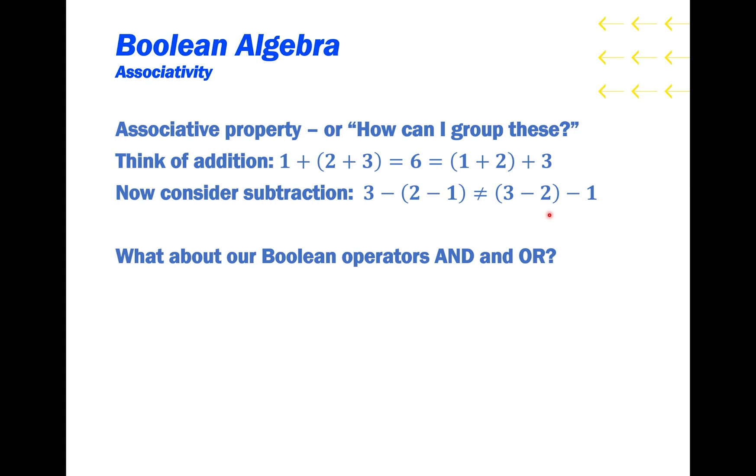So what about our Boolean operators AND and OR? Does A and B and C still give you the same answer if you do the B and C first before the A and B? And what about A or B or C? Will that give you the same if you do the B or C before the A or B? Yes. You can prove this by building a very simple example circuit in CircuitJS, but for now you can just take my word for it.